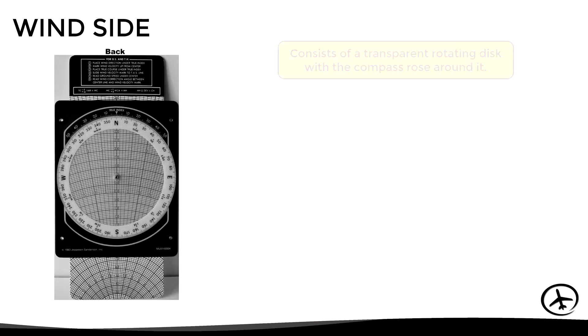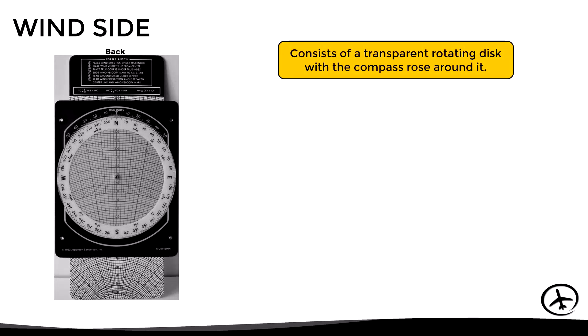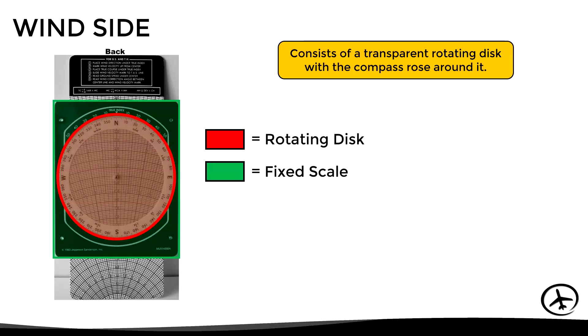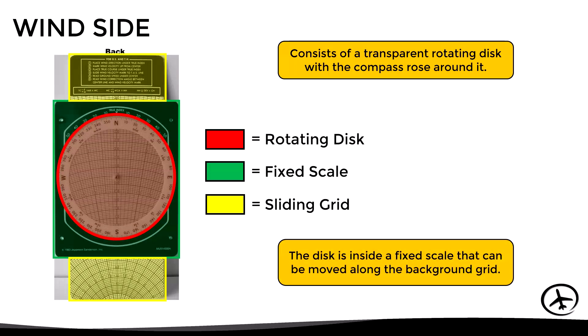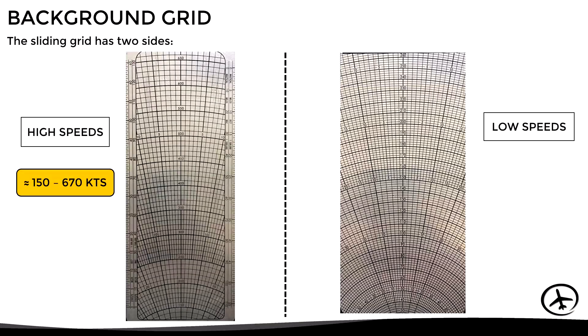The wind side consists of a transparent rotating disk with the compass rose around it, which in turn is inside a fixed scale that can be moved along a background sliding grid. This background grid also has two sides: one used for high-speed calculations, and the other used for lower speeds. The grid to be used will depend on the problem we are solving. Let's look at the different reference markings that we can find on the wind side of the flight computer.